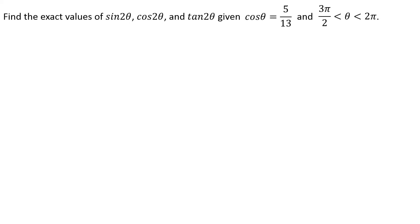Let's find some exact values. We know cosine of theta is 5 thirteenths, and we're in quadrant 4 — theta is greater than 3π/2 but less than 2π. We want to find sine of 2θ, cosine of 2θ, and tangent of 2θ.